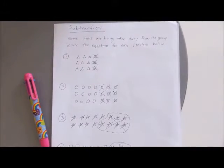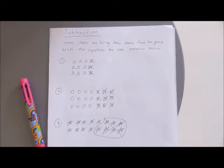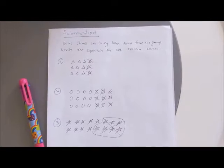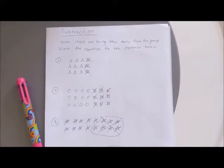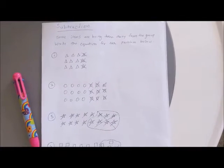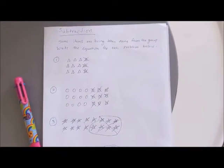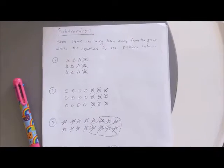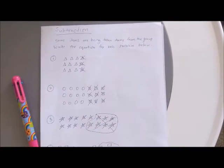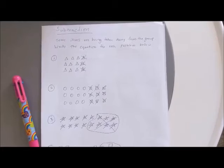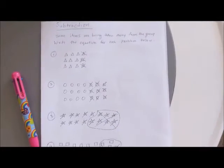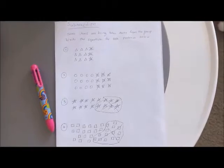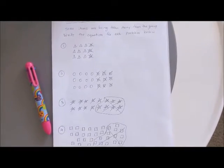I have given 6 sentence problems which the child has to solve and write the answer below. The next one is subtraction — some items are being taken away from the group and the child has to write the equation for each problem. For example, in the first one I have given 12 triangles and out of that 3 have been crossed out, so the child has to write 12 minus 3 equals 9. For this subtraction section I have given 4 problems.